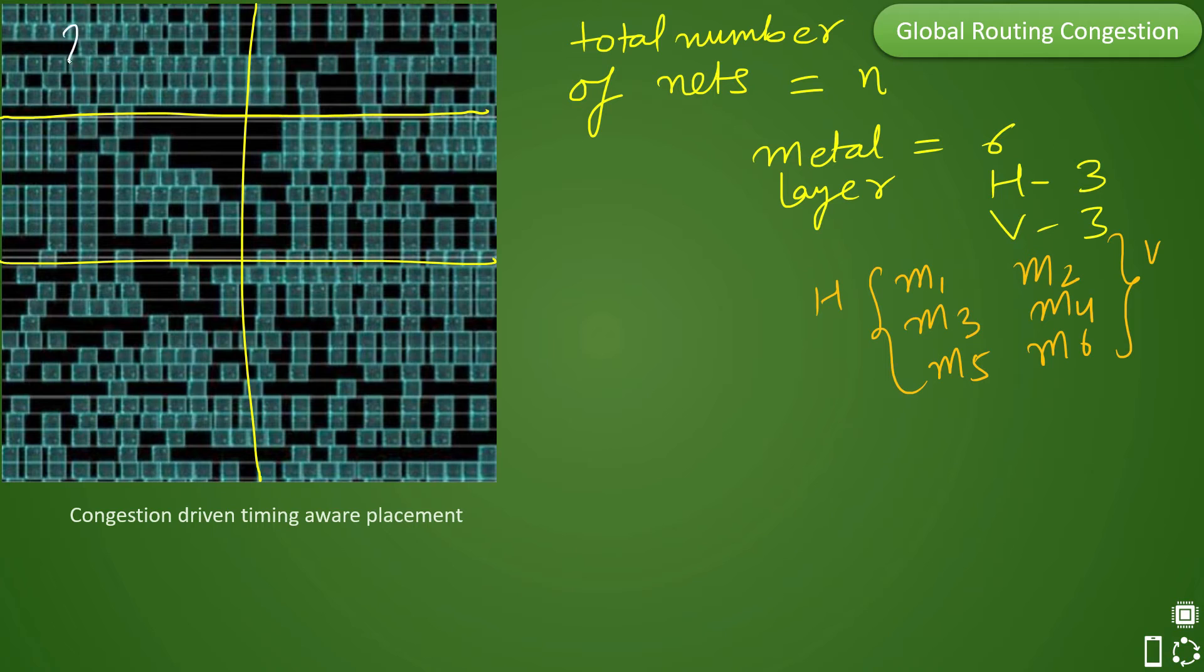So let's say there are 25 nets which are going in total in this particular G cell. So out of that 25, you have in the vertical direction, which means you have M2, M4 and M6 in this direction, and your routes will be going in horizontal direction like this. So M1, M3 and M5 will be going like this. And let's say out of these 25 nets which are going through this particular G cell, you have 8 nets going in horizontal and you have 17 nets going in vertical direction.